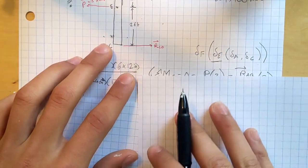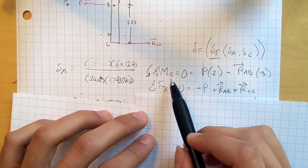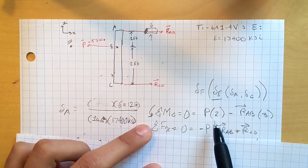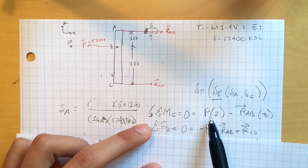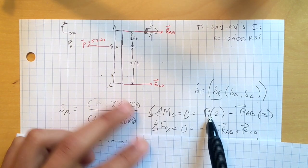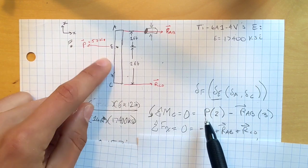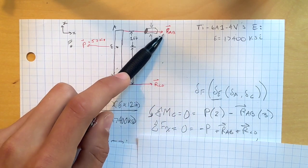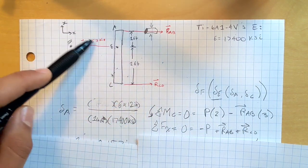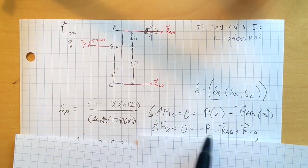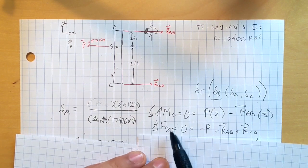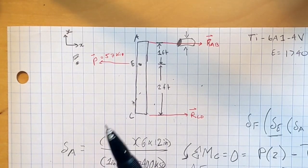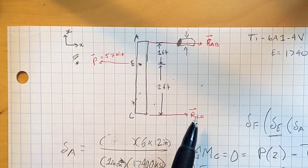We need to use some equations of equilibrium. So we can start by taking a moment about C. Bada bing, bada boom. And we know that it has a component from P, which is two feet away from C. And it has a component from R_AB, which is three feet away from it. And we can also sum the moments in the X direction. We don't have to worry about the Y because there's no vertical forces. We got this boy, we got this boy, we got this boy.